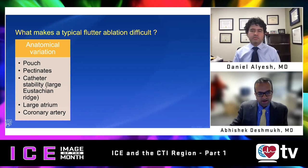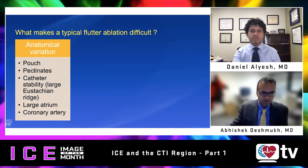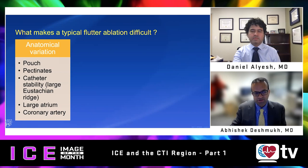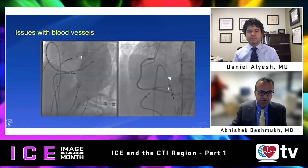Generally you would expect the CTI to be like a straight line and a smooth highway, but there are definitely going to be some potholes. Sometimes these typical flutters become somewhat difficult to ablate — you can encounter pouches, you can encounter prominent pectinate muscles, catheter stability can be an issue, there can be a severely dilated right atrium, or proximity to blood vessels including coronary arteries and small cardiac veins.